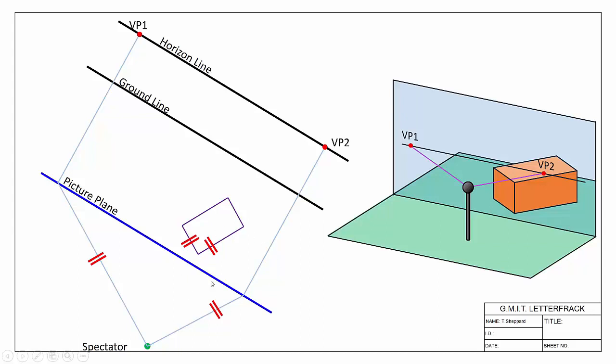So the setup that we have here, I've filled in our vanishing points by going parallel to my various directions. Direction 1 here giving me VP1, direction 2 going parallel from our spectator onto the picture plane giving us VP2. That's the basic setup.